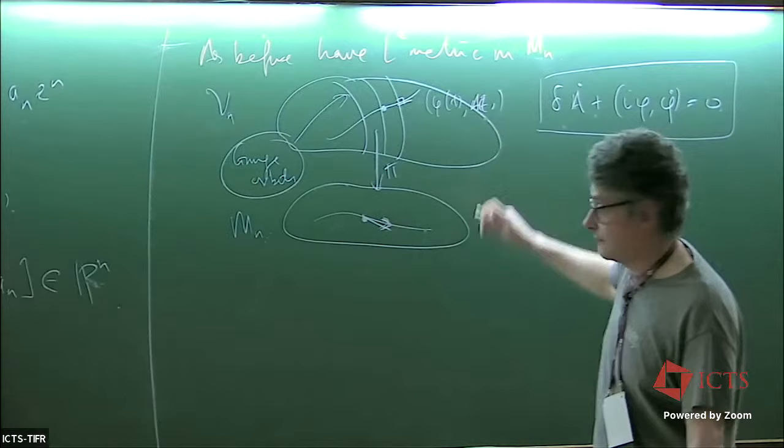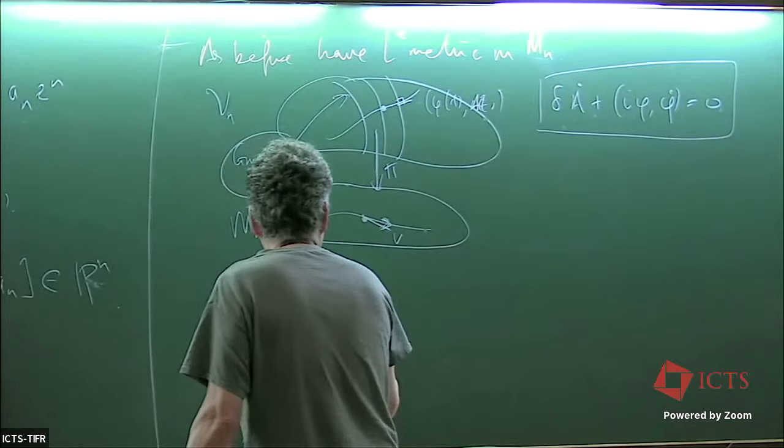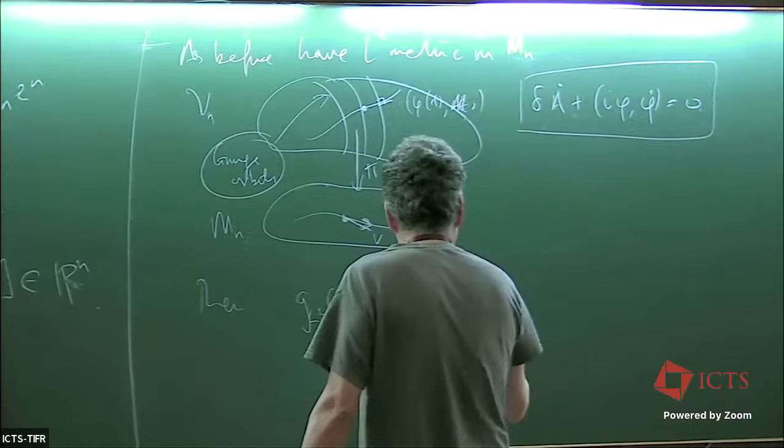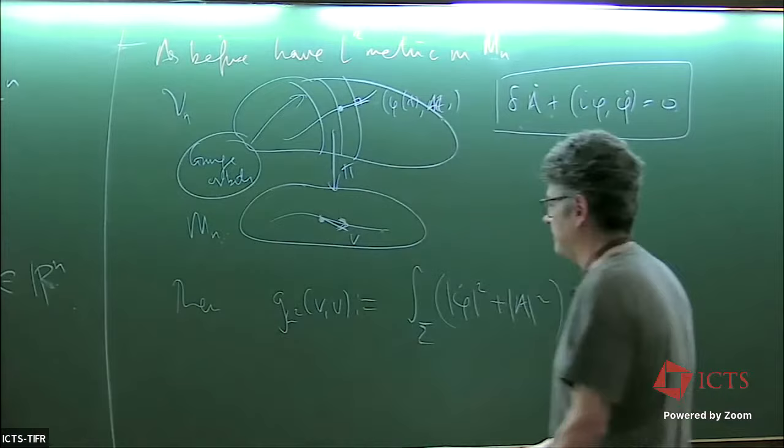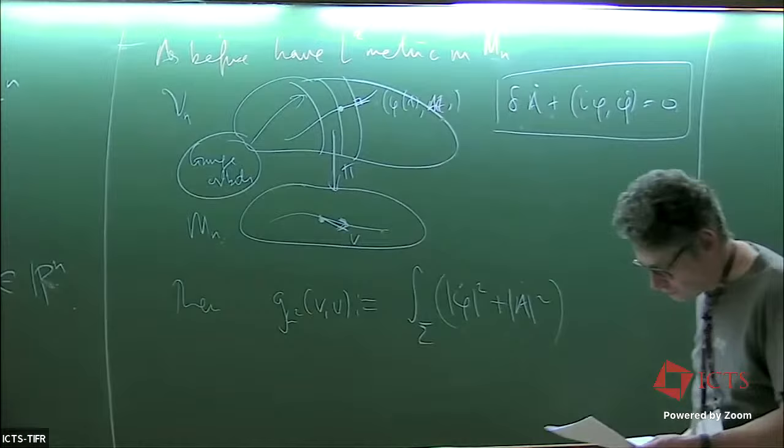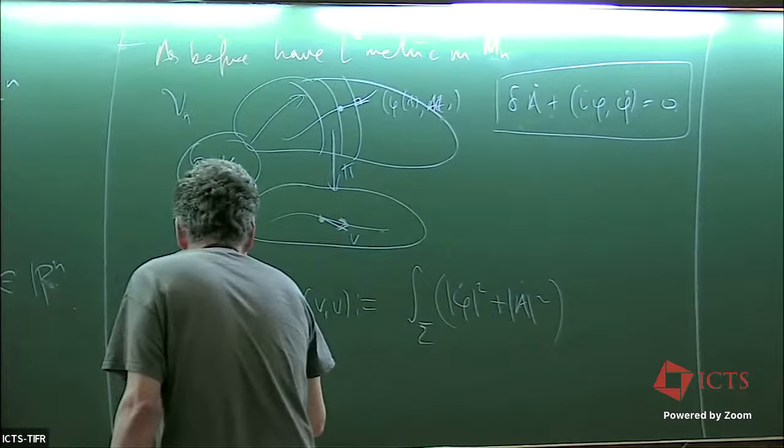The squared length of a tangent vector V is defined as the squared L² norm: the integral over sigma of |φ̇|² + |Ȧ|², where the lift satisfies the orthogonality condition. This turns out to be Kähler, which is not obvious from the definition but is true.